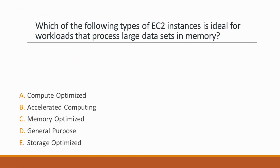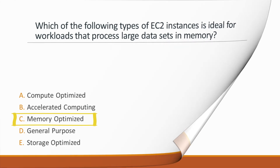Next question: Which of the following types of EC2 instances is ideal for workloads that process large datasets in memory? Options: A. Compute-optimized, B. Accelerated computing, C. Memory-optimized, D. General-purpose, E. Storage-optimized. Correct answer is option C, Memory-optimized, because memory-optimized instances are specifically for workloads that require more memory than usual to process data.